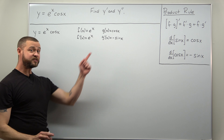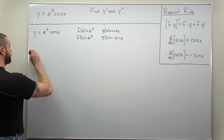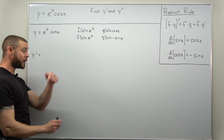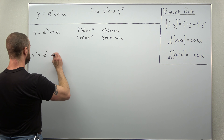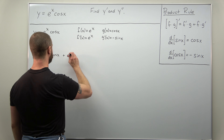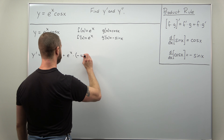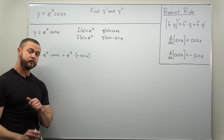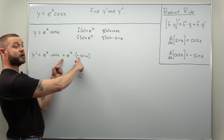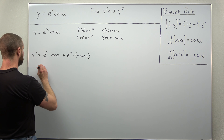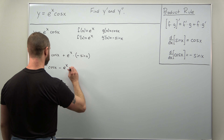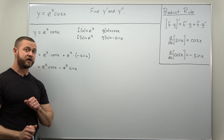Next we're going to combine the pieces back together using the product rule. We'll get y prime, the first derivative, and that comes out to f prime times g — e to the x times cosine of x — and then we add to that f times g prime — e to the x times negative sine of x. Let's simplify now: we'll rewrite this as e to the x times cosine of x minus e to the x times sine of x. And that's the first derivative y prime.